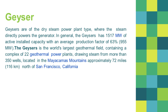Geysers are of the dry steam power plant type, where steam directly powers the generator. The Geysers has 1,517 megawatts of active installed capacity with an average production factor of 63%, equating to 955 megawatts. It is the world's largest geothermal field, containing a complex of 22 geothermal power plants drawing steam from more than 350 wells, located in the Mayakamas Mountains approximately 72 miles (116 kilometers) north of San Francisco, California.